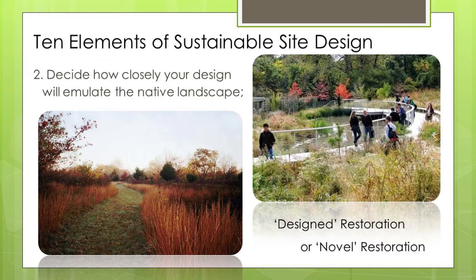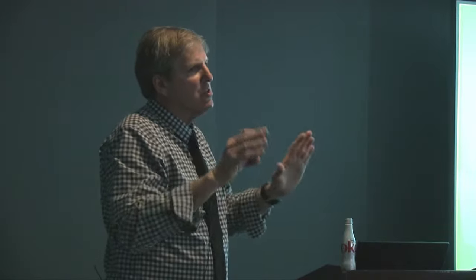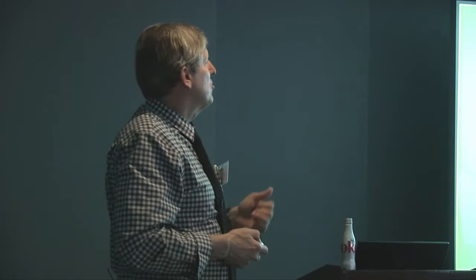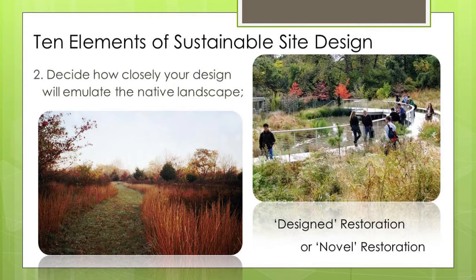Design: how closely will your design emulate the native landscape? Will it be a design restoration where you can pick out the individual plant species, or will it be what they call a novel restoration? There's no such thing as a true restoration according to the academics — you can get close, but how will you emulate? Will you mix a high diversity species count, or will you have a few species but look for a lot of differentiation between them?